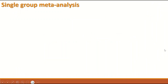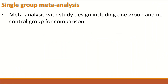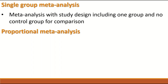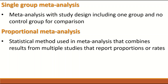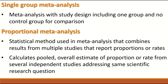So what is single group meta-analysis? It is a meta-analysis with a study design including only one group and no control group for comparison, and that's why it's called single group meta-analysis. Proportional meta-analysis is one type of single group meta-analysis. It is a statistical method used in meta-analysis that combines results from multiple studies that report proportions or rates, calculating the pooled overall estimate of the proportion or rate from several independent studies addressing the same scientific research question.